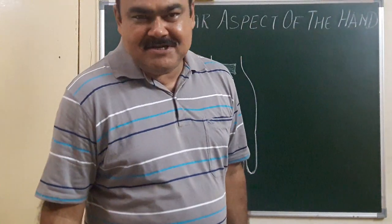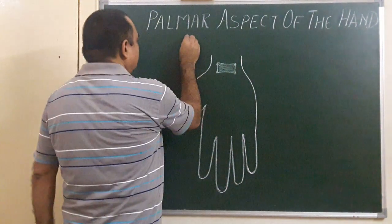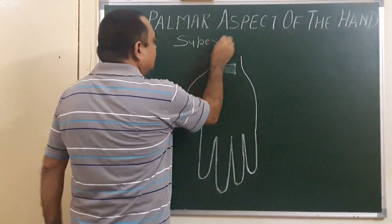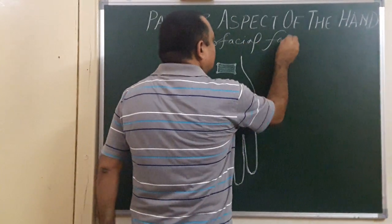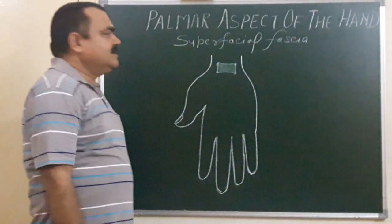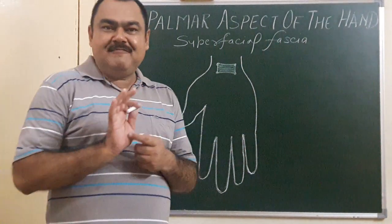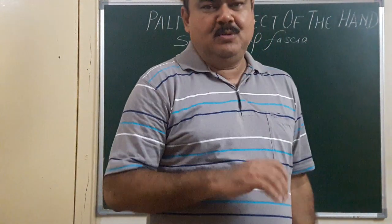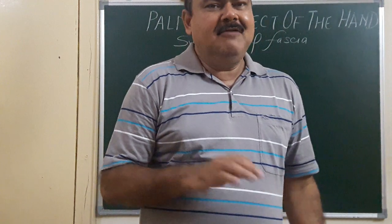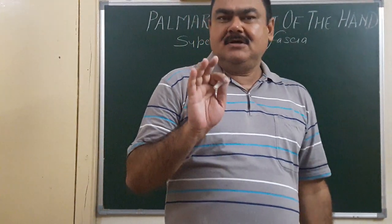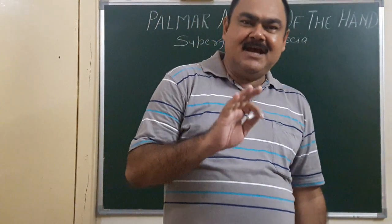We will discuss the superficial fascia of the palmar aspect of the hand. The superficial fascia here has fibrous fatty tissue. By this fibrous tissue, the skin is connected with the deep fascia, and the fatty tissue forms a cushion-like structure. So this superficial fascia is fibrous here.